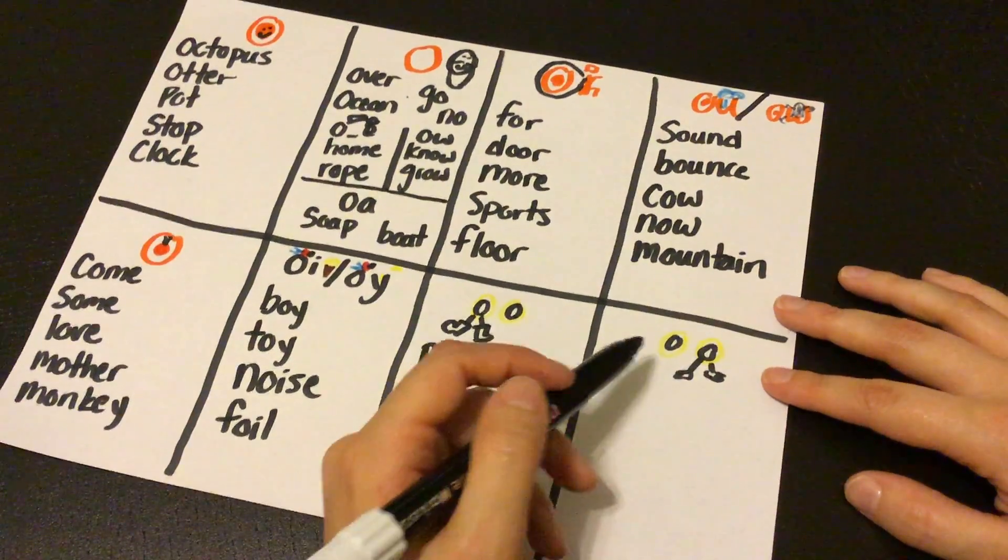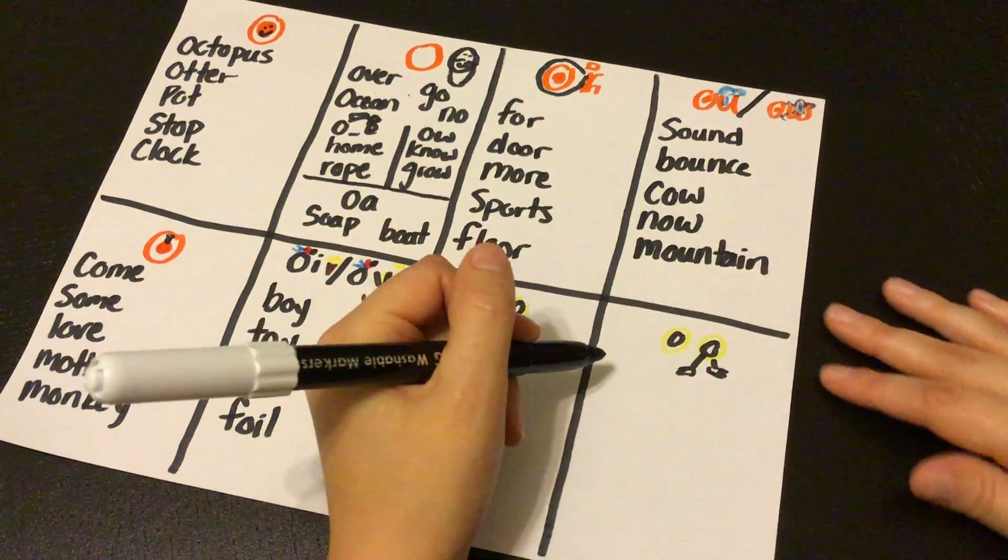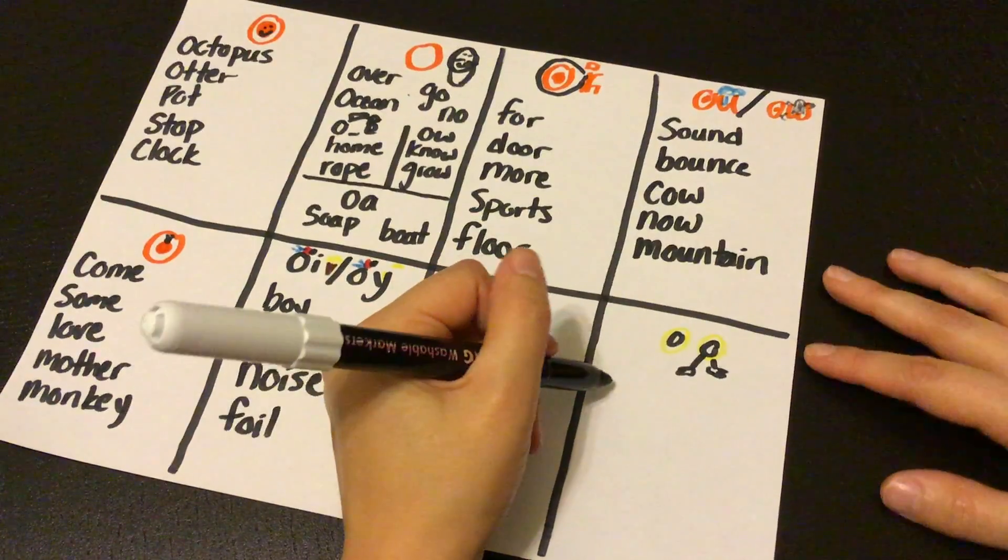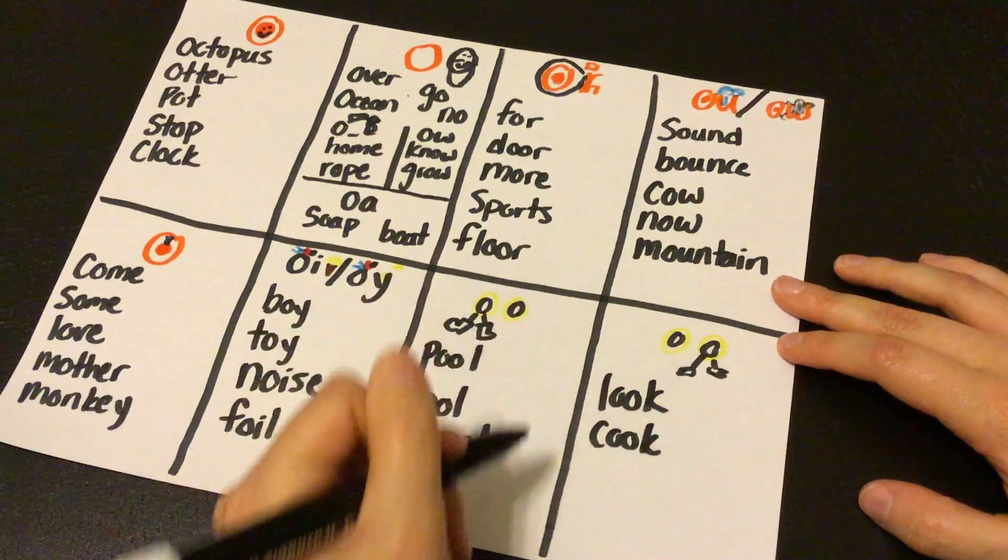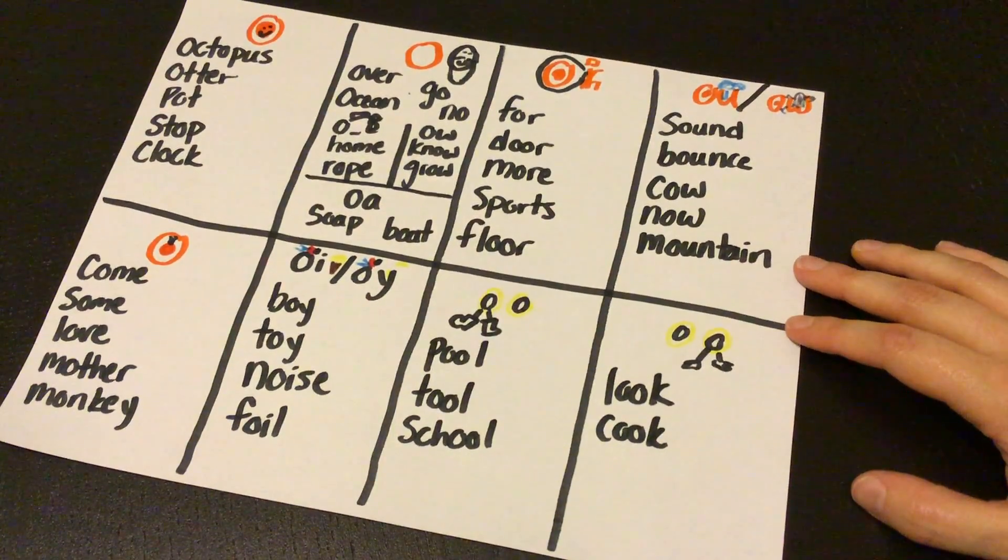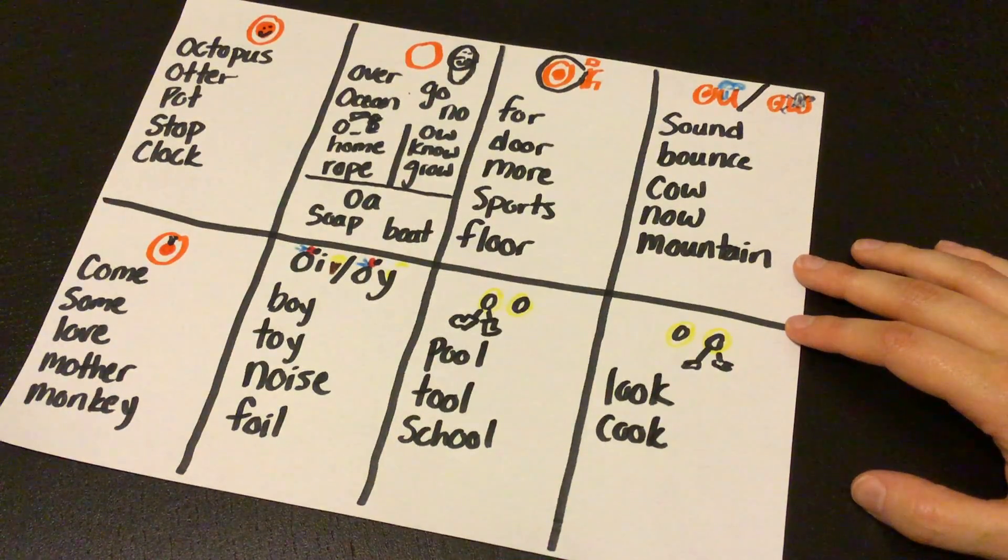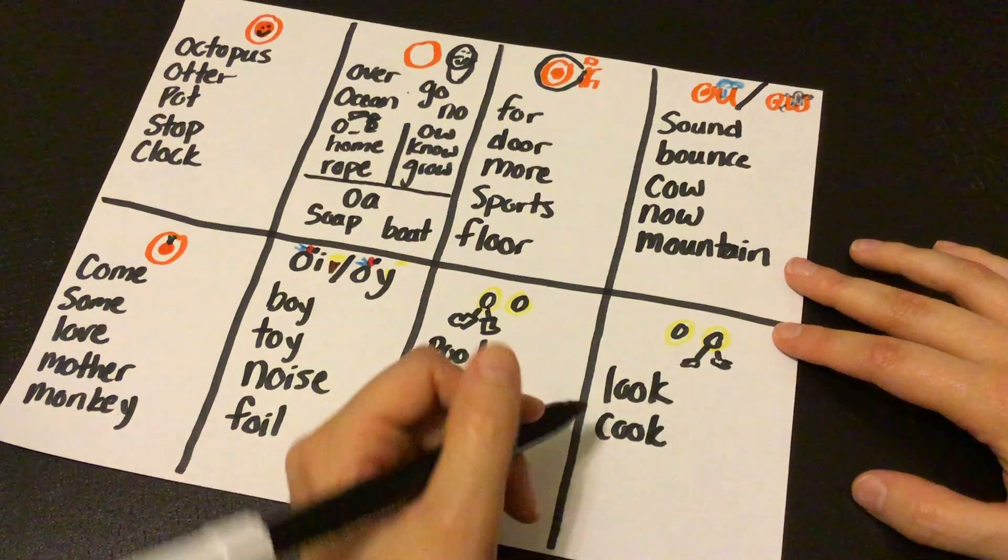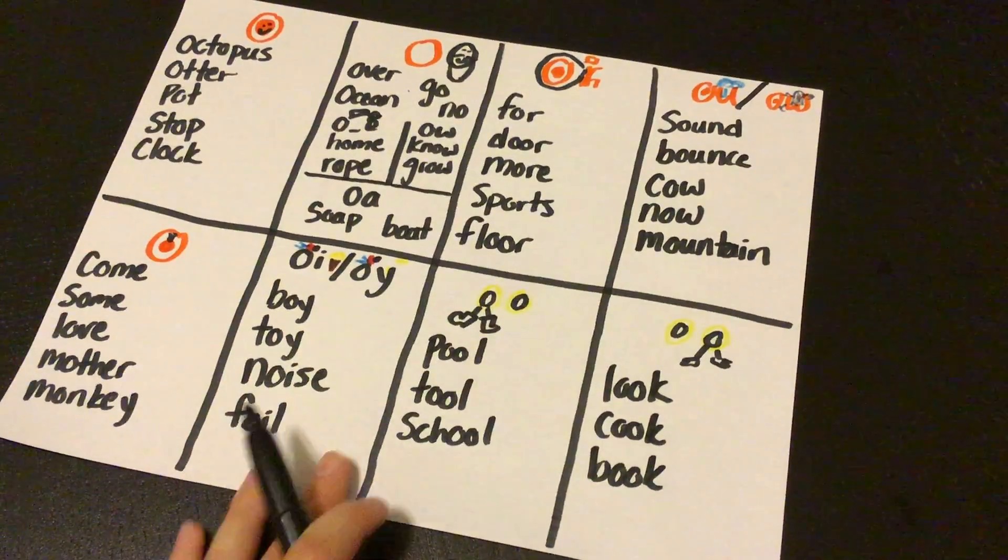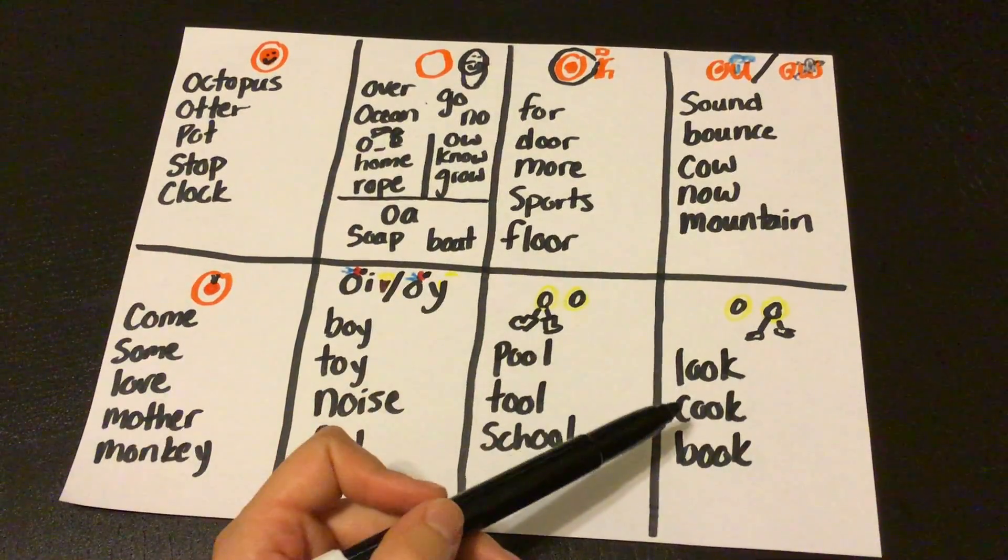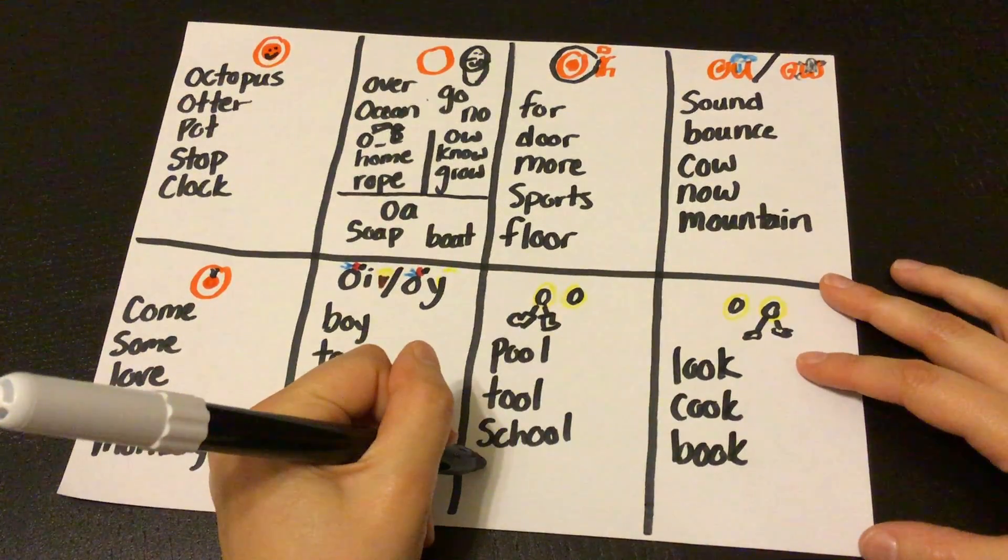Then for our foot twin, we have words like look, look, look, and cook, right? Look, cook, foot, book, right? So we've got our ooh and our uh words. Scooter is a boot word.